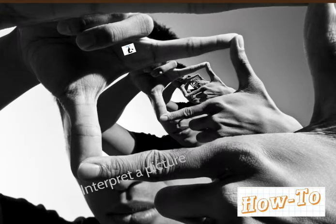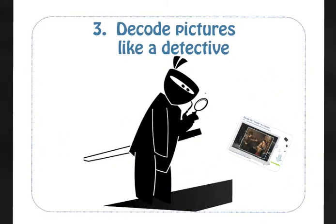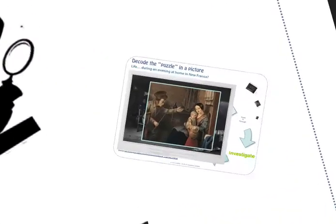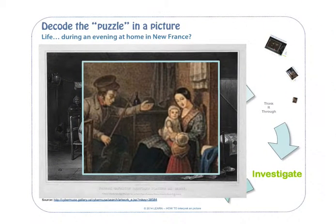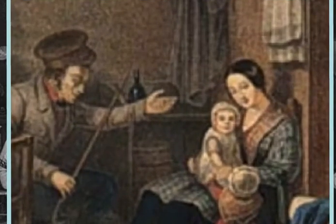How to interpret a picture sometimes implies being more of a detective than anything else — decoding the picture as a detective would, rather than a historian. Sometimes you have to decode the puzzle inside a picture. For example, take this image of life during an evening at home in New France. What's going on exactly? Zoom into a part of the picture and decide what's going on between this father, this mother, and these children.